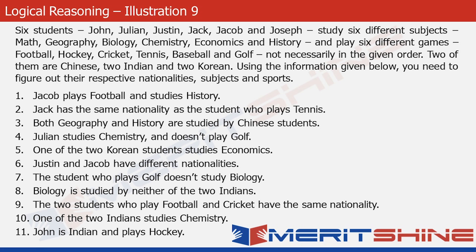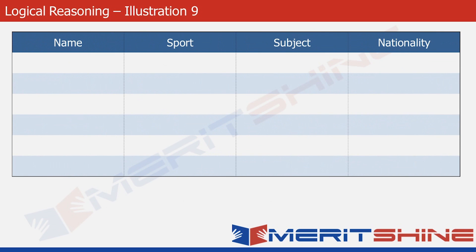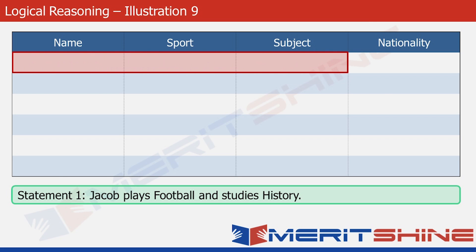Let's proceed with solving the problem now. The first thing we have to do is make a table with four columns for names, sports, subjects, and nationalities. Now let's try filling this table. The first statement we would use is statement one — it says that Jacob plays football and he studies history. We can put this anywhere in the table, so let's put this in the first row.